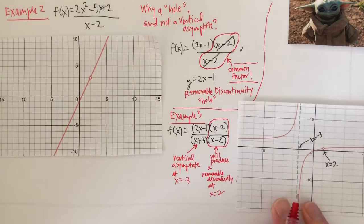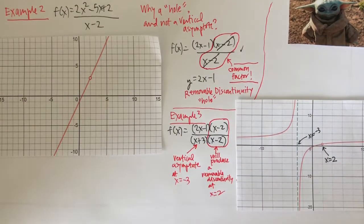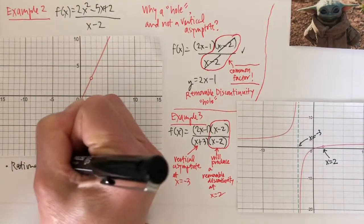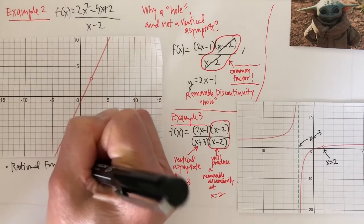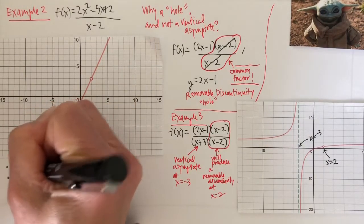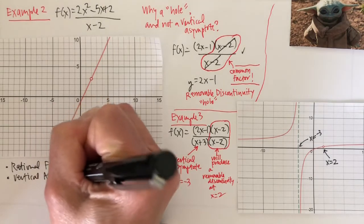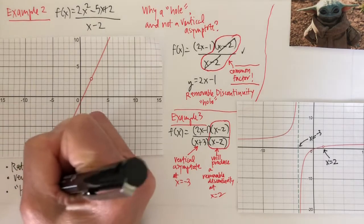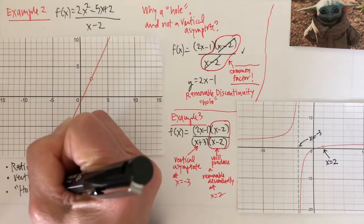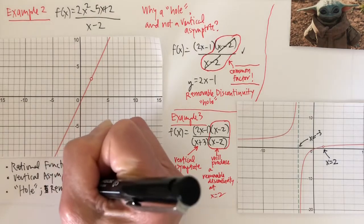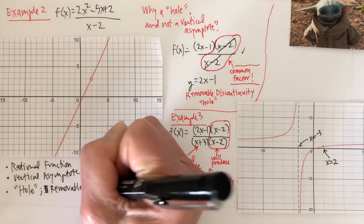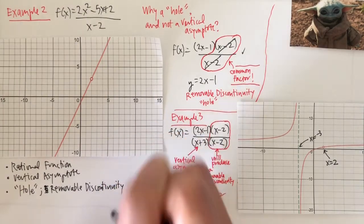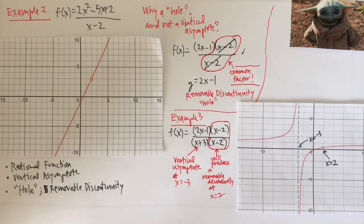We'll talk more about rational functions in the next video. So far, you know what a rational function is, you know what a vertical asymptote is and when it happens, and you know what a hole or removable discontinuity is and when that happens.